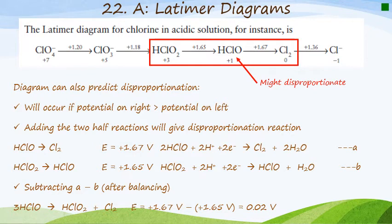Now, what else can the Latimer diagram tell us? Besides the fact that it tells us what's going on with the electrode potentials, it can also predict disproportionation. Now disproportionation will occur if the potential on the right of a species is greater than the potential on the left. And if we add the two half reactions to give us the disproportionation reaction, we will find that there's a probability of there being disproportionation taking place.